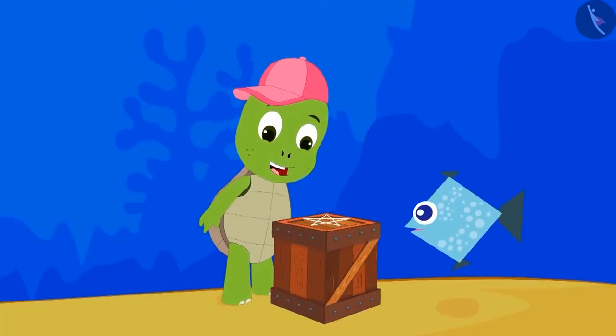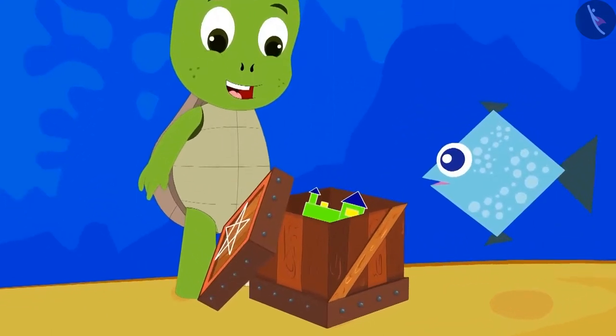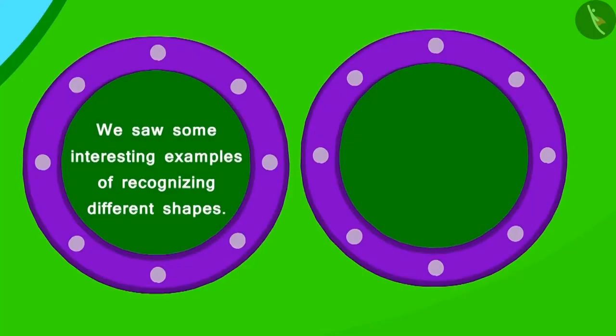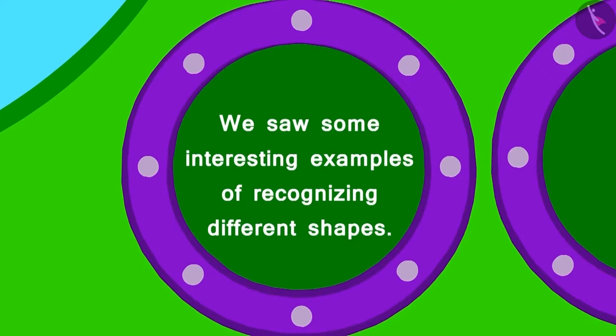Now the fish opened the box and returned Tufan's toy. Children, in this lesson, we saw some interesting examples of recognizing different shapes.